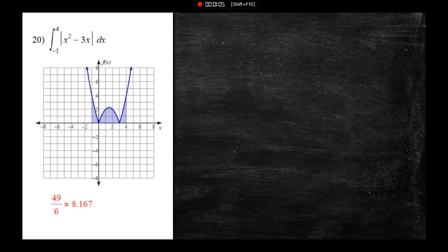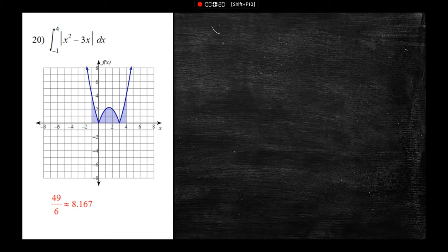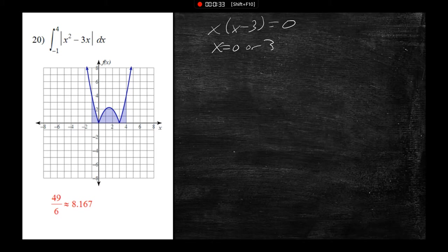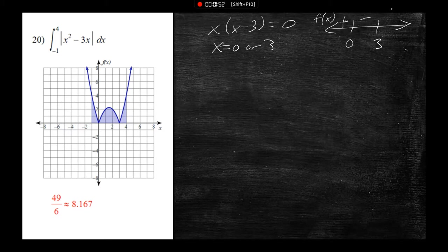Here's what it looks like. I want to integrate from negative 1 to 4 of the absolute value of x squared minus 3x. The first thing I'm going to do is figure out when this absolute value part will be negative, so I'll set x times (x minus 3) equal to zero, giving x equals 0 or x equals 3. Testing around those points: plugging in negative 1 gives a positive answer; plugging in positive 1 gives a negative answer; plugging in anything above 3 gives a positive answer.